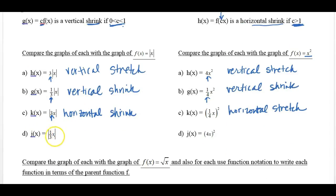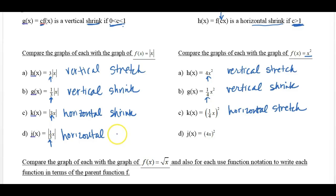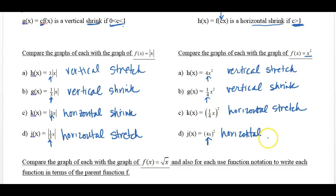Let's come back and look at 1 third on the inside of the absolute value bars. Since it's on the inside, it's a horizontal change, but it's less than 1, between 0 and 1, so we would think it's shrinking — but it's actually stretching, because it's horizontal. And over here, that 4 is on the inside, so this is horizontal. Since 4 is greater than 1, you would think it was stretching, but it's actually shrinking.